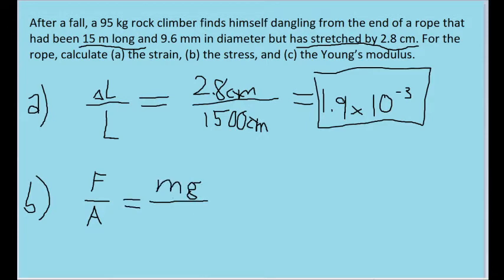The force of a weight is mg, where m is the mass of the climber, and g is the acceleration due to gravity. Now as I mentioned a moment ago, A is just the area over which the force acts, which in the case of a climber pulling the rope vertically downward, is just going to be the area of the cross section of the rope, or in other words, the area of the circle, which is known to be pi times the radius squared.